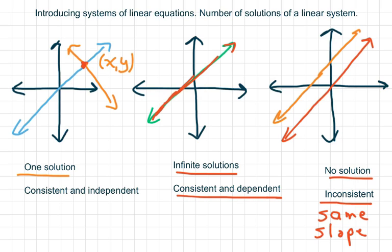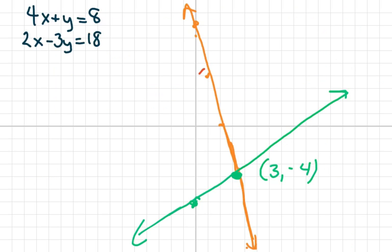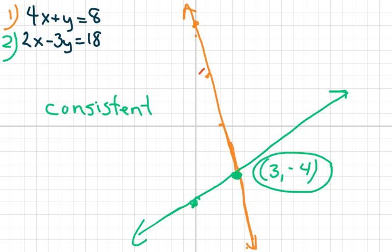All right, we're going to go over each one. Here's one where I graph both equations. Number one is the orange one, and number two is the green one. They intersect at the point (3, -4). That means these are consistent and dependent.